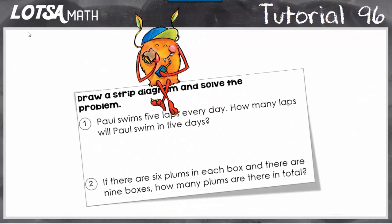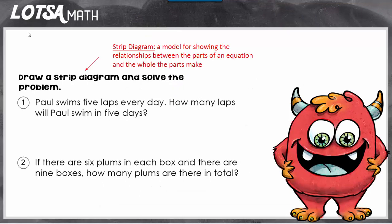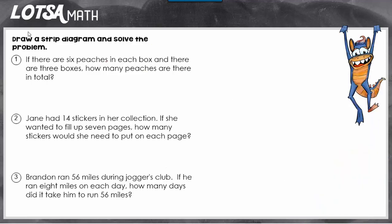For these questions, we're going to use a strip diagram to help solve the problem. A strip diagram is a model for showing the relationship between the parts of an equation and the whole that the parts make. Let's look at some different examples of how you might have to do this.